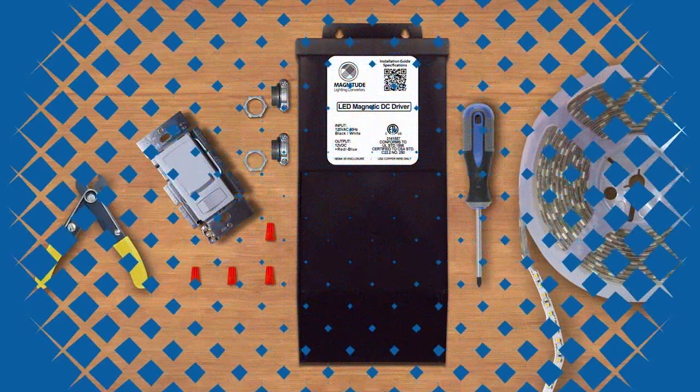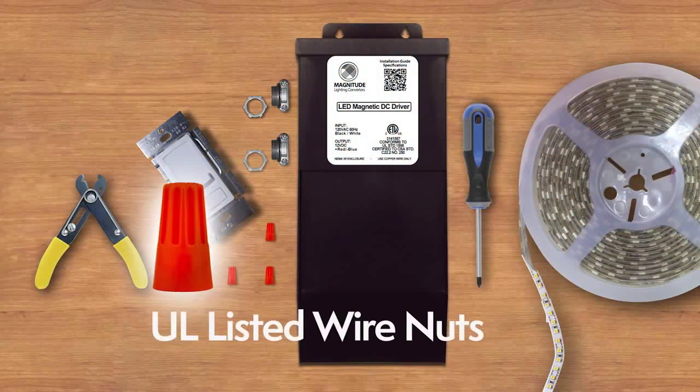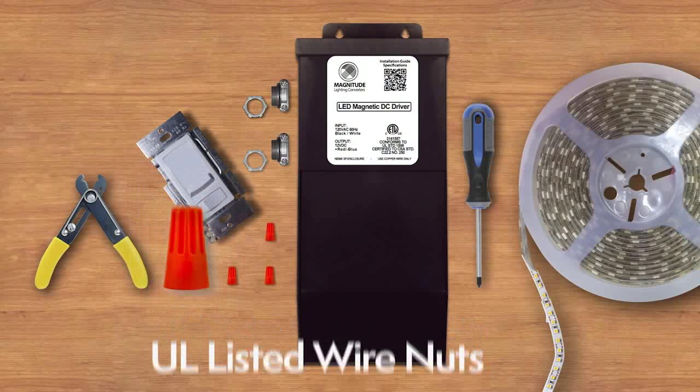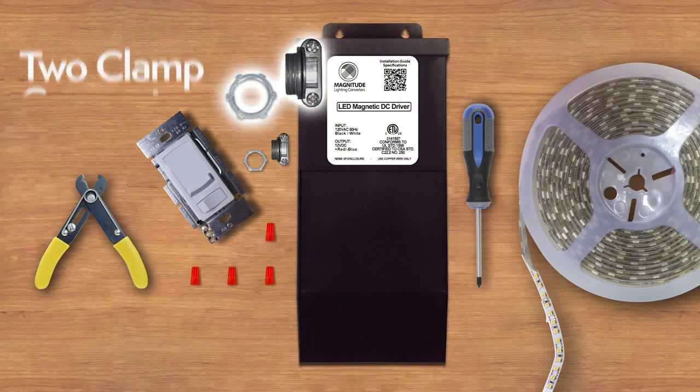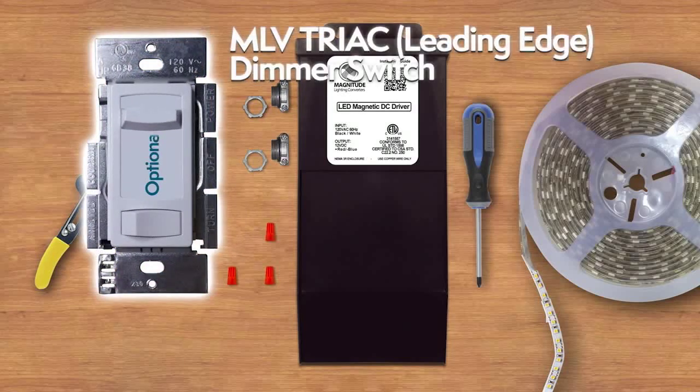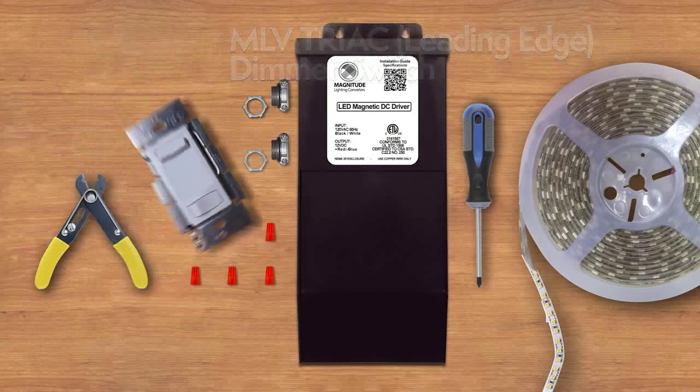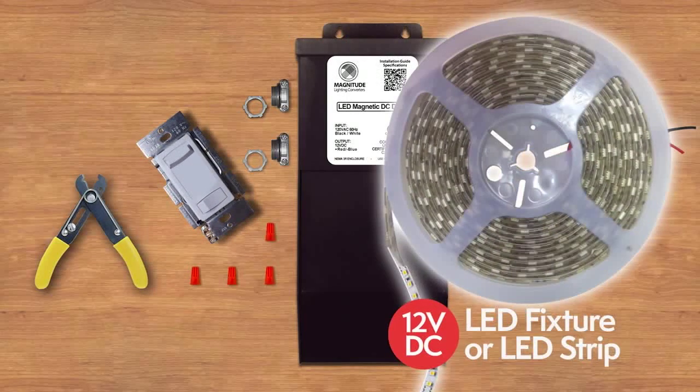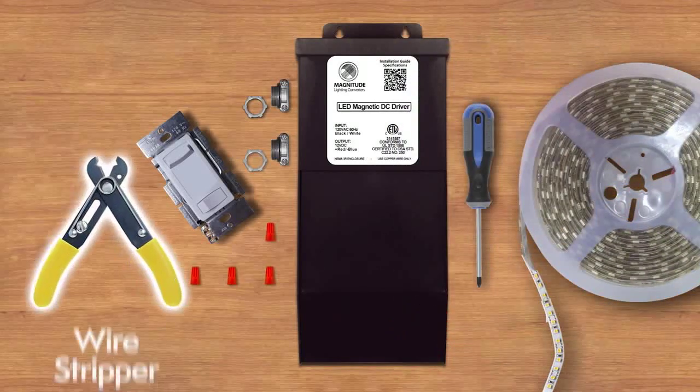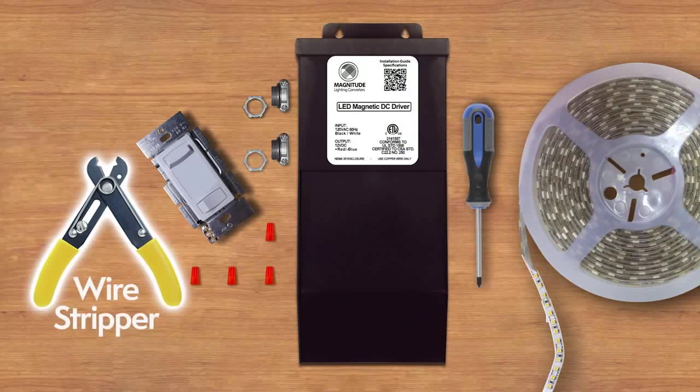The tools you need for the installation: UL listed wire nuts, tube clamp connectors, an optional MLV Triac leading edge dimmer switch, a 12 VDC LED fixture or LED strip, a wire stripper and a Phillips head screwdriver.